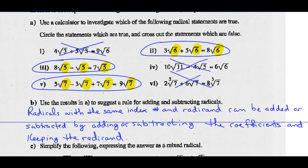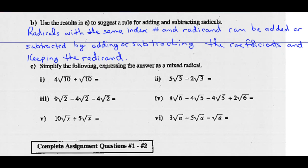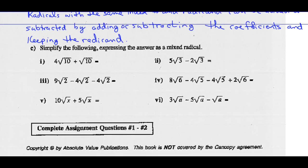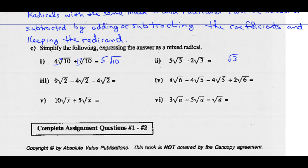So part C, let's simplify the following, expressing the answer as a mixed radical. So 4 root 10 plus 1 root 10 — we've got the same index number of 2, understood to be there. We keep that radicand root 10, and we add 4 plus 1. 4 plus 1 is 5, so that should be 5 radical 10. Example 2: 5 root 3 minus 2 root 3. We've got the same index number and radicand, so we keep radical 3 and go 5 minus 2. 5 minus 2 is 3, so 5 root 3 minus 2 root 3 is 3 root 3.